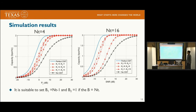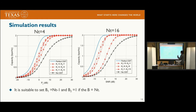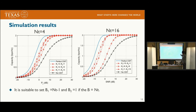The simulation results show capacity versus transmit power. For NT=4, we compare three bit combinations: B1=3 B2=1, B1=2 B2=2, and B1=1 B2=3. The best combination is B1=3 B2=1, meaning three bits for channel direction quantization and one bit for the residual phase. For NT=16, we similarly find the best combination is B1=15 B2=1. In practice, it is suitable to set B1 equal to NT minus 1 and B2 equal to 1.